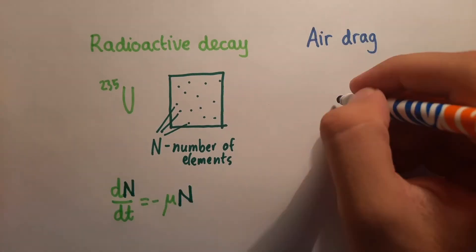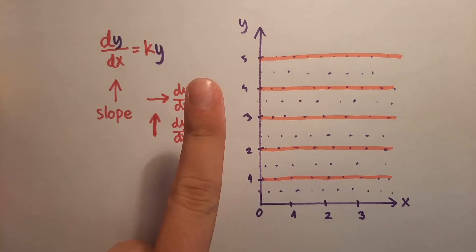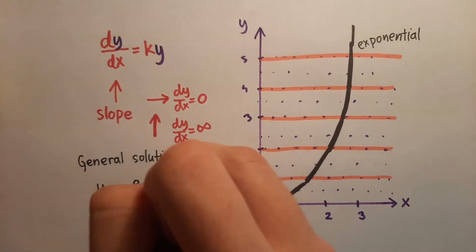That also gives us a hint why it is so common in nature, as a power function with Euler's number in the base is a solution to a differential equation, where rate of change is proportional to the changing period.